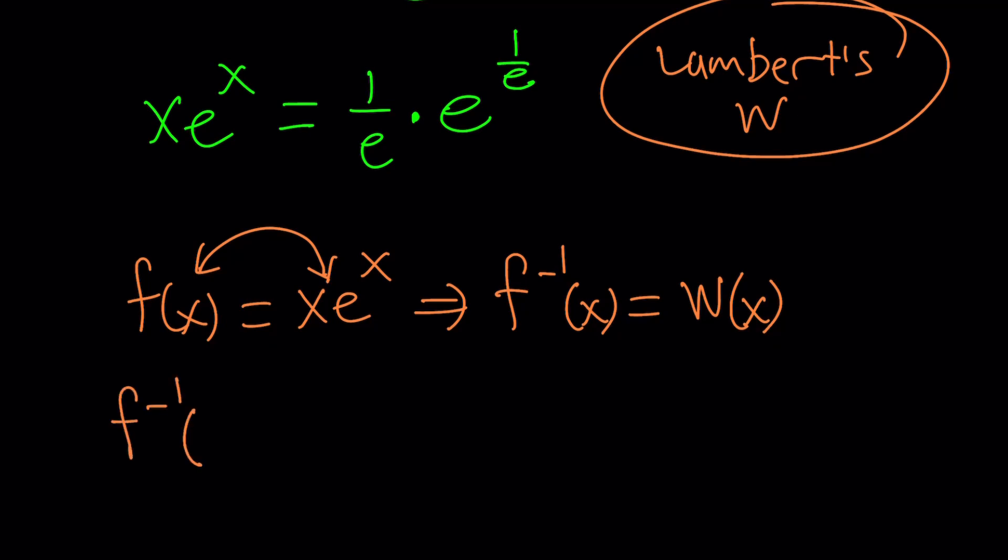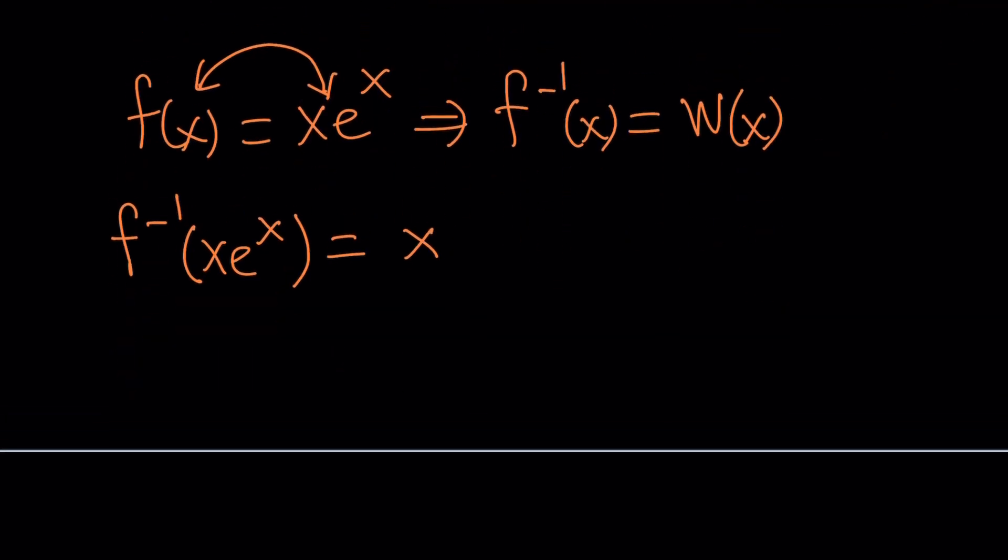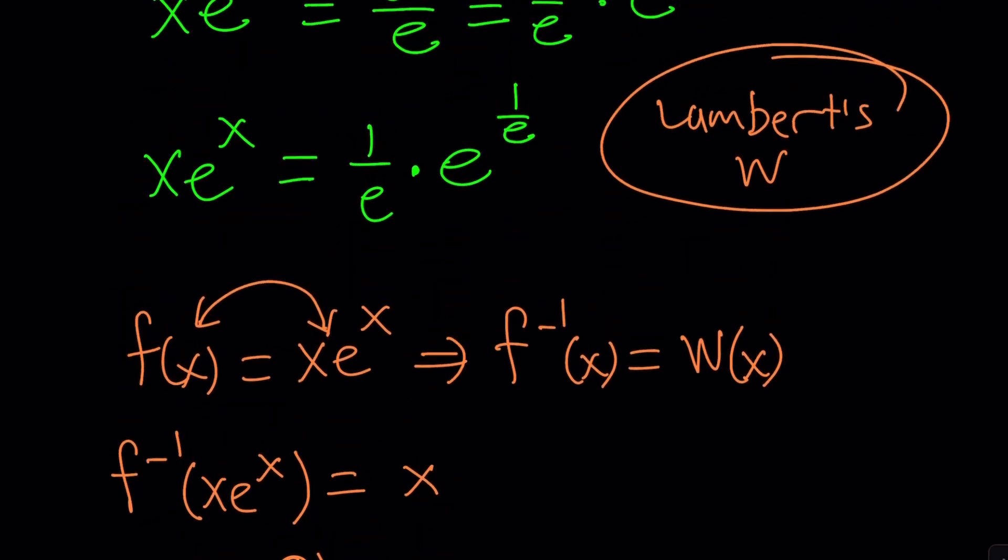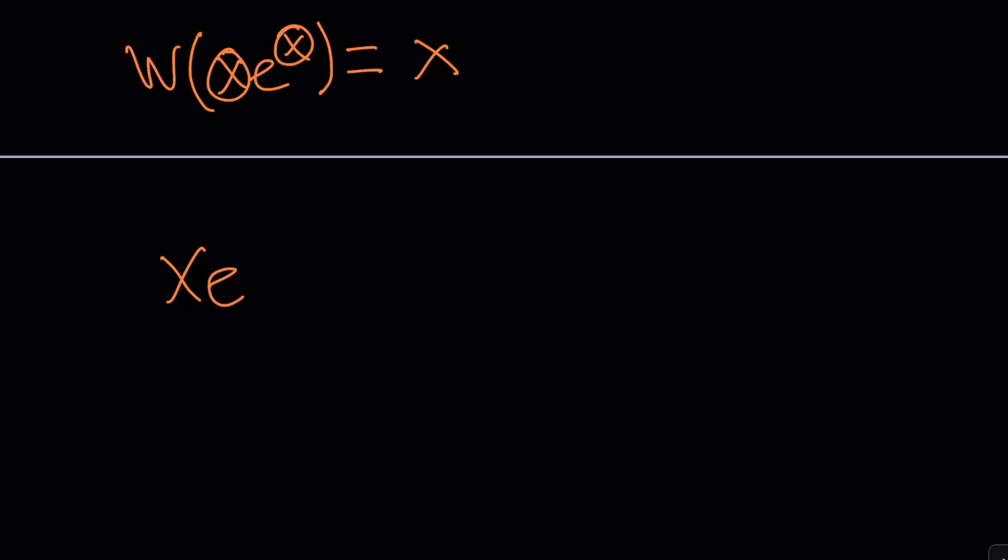But to keep a long story short, if we kind of switch these around, we get the following. f inverse of (x times e to the x) equals x. So, we're kind of talking about a function whose input is x times e to the x and whose output is x. And that is exactly what Lambert's W does. So, it takes this as an input and then the output becomes x. So, it kind of extracts the x in this expression.